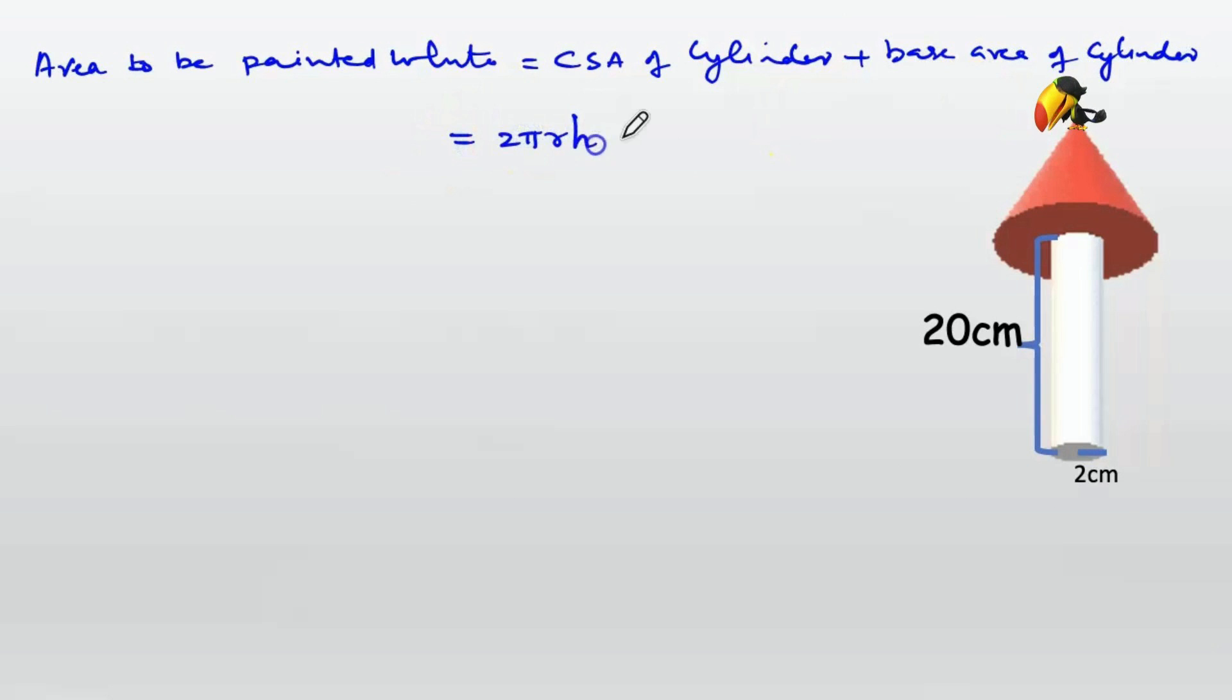This equals 2πRH plus πR². Equals 2 into 22/7 into 2 into 20 plus 22/7 into 2².